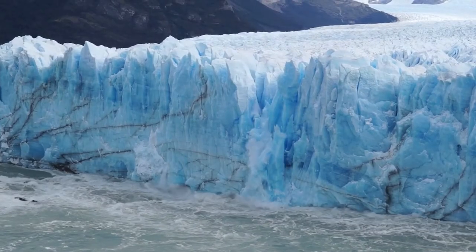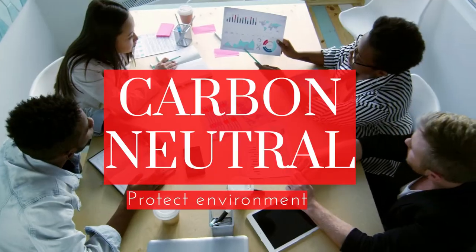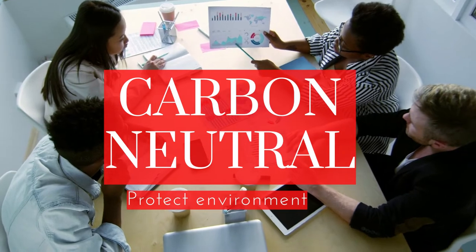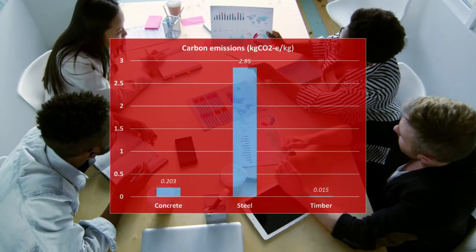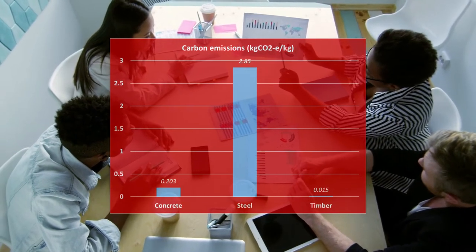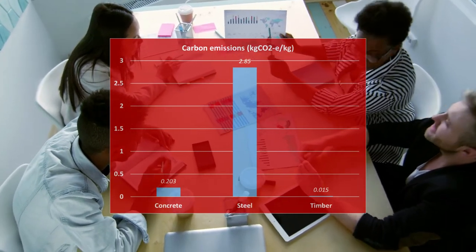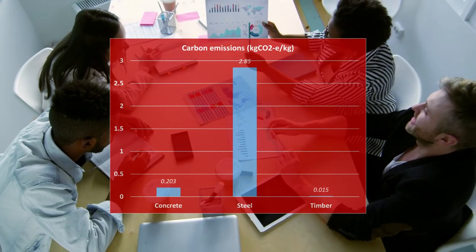Recently, with the increased awareness and attention of the whole society on climate change, decarbonizing from the engineering society has become a goal in new structure development. It is worth noting that timber has a much lower embedded carbon compared with concrete and steel — meaning the greenhouse gas generated during timber material production is much lower than the other two. Wherever possible, timber structural options have drawn more attention from engineers.